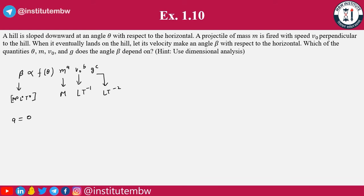If you compare the right-hand dimension and left-hand dimension, then a is equal to 0. And b plus c should be 0, and minus b minus 2c is equal to 0. So it will lead to a is equal to b is equal to c is equal to 0.